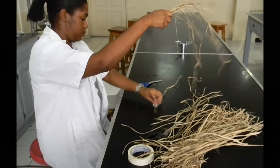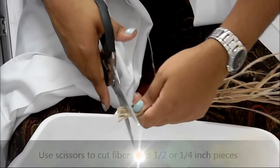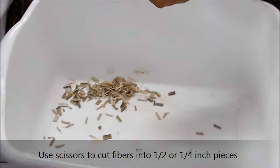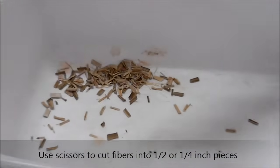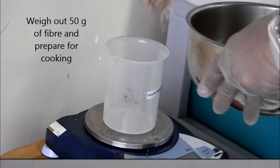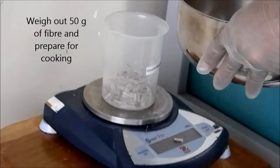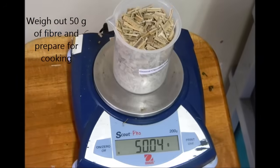Then you take those fibers and you cut them into about half or quarter inch pieces so that you can allow them to increase your surface area. You can weigh out maybe 15 grams, 50 grams depending on the amount of samples that you're going to make.